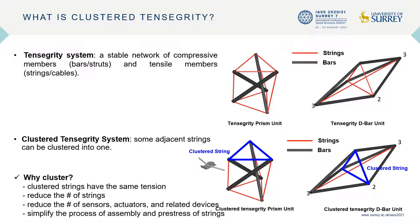A tensegrity system is a stable network of compressive members and tensile members. If some of the adjacent strings are clustered into one, we call it cluster tensegrity. There are many benefits — for example, you can reduce the number of strings, sensors, actuators, and related devices.